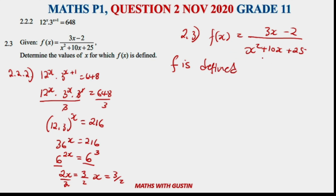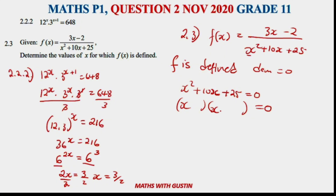f(x) is defined when the denominator is not equal to zero. Setting x squared plus 10x plus 25 equal to zero and factorizing gives (x + 5)(x + 5) equals 0, so x equals minus 5. Therefore x cannot equal minus 5 — as long as x is not minus 5, the function is defined, since dividing by zero is undefined. I'm Gaston Mapala, see you on the next upload where we'll cover question 3 of November 2020 up to 2022.